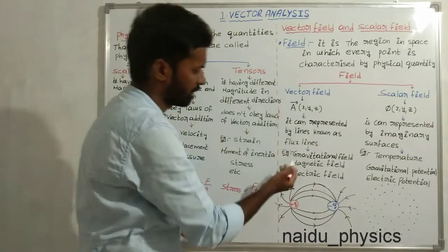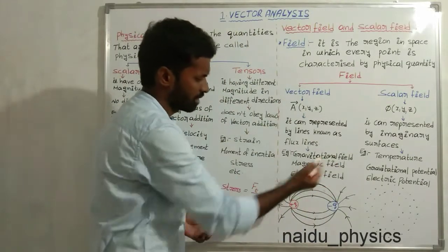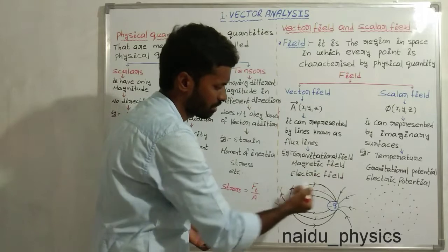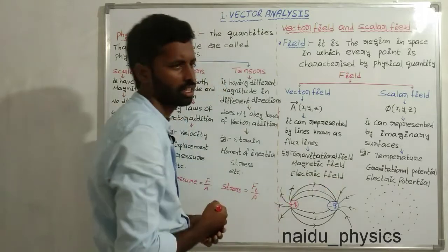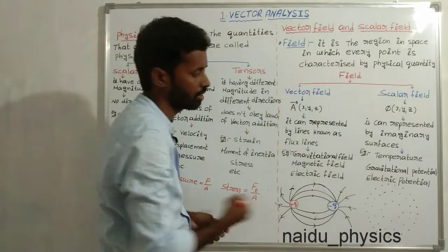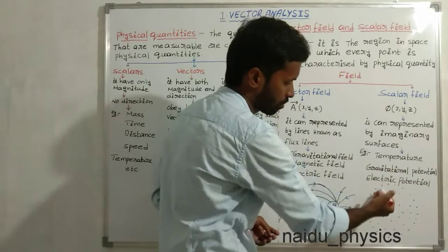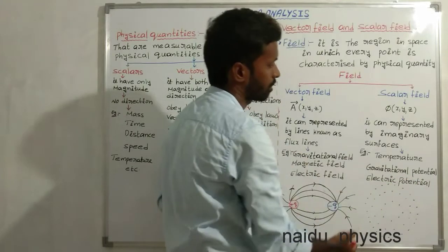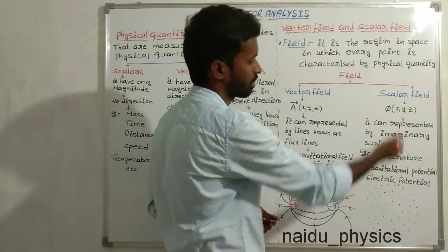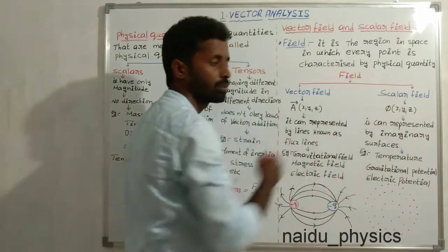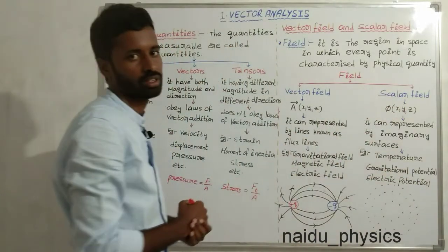Examples of vector fields: gravitational field, magnetic field, and electric field. Examples of scalar fields: temperature, gravitational potential, and electric potential.